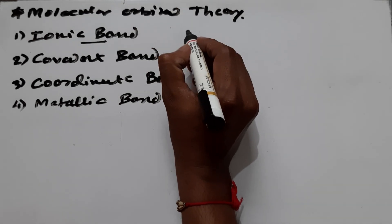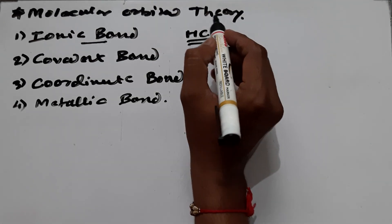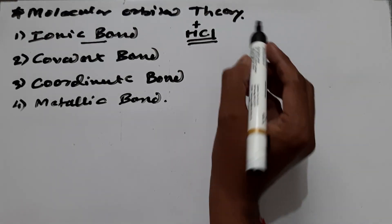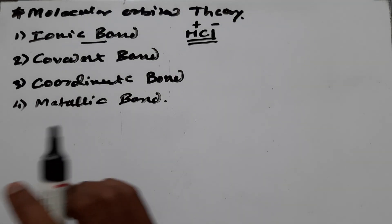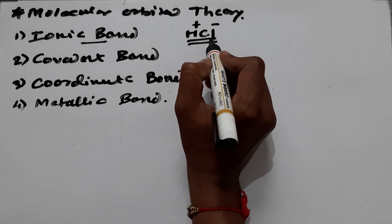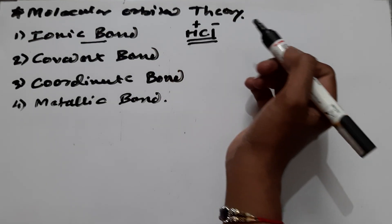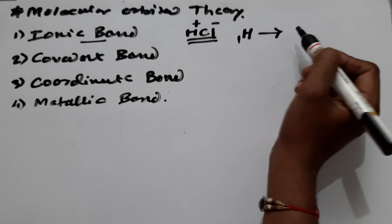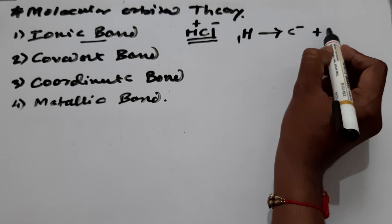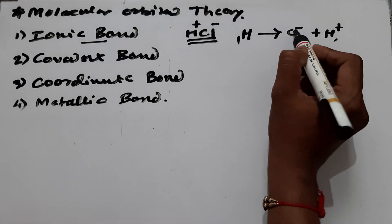To explain the ionic bond, suppose we consider the example of the HCl molecule. Here, hydrogen carries a positive charge and Cl carries a negative charge. One concept that is very important here is electronegativity. In the case of the ionic bond, if we consider the electronegativity of both elements, Cl is more electronegative compared to the hydrogen atom. So hydrogen will lose one electron and be converted into H positive — that is, a proton.